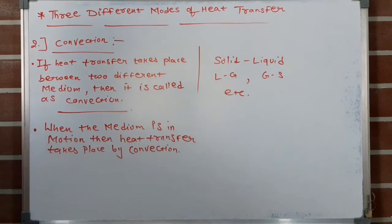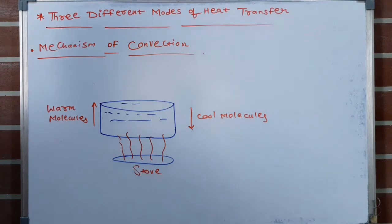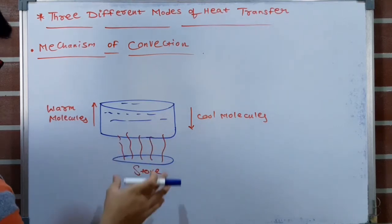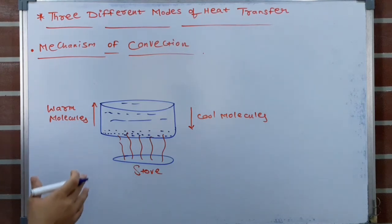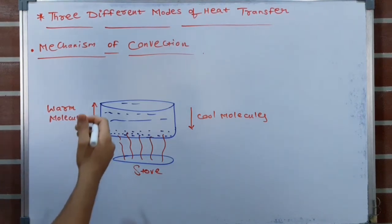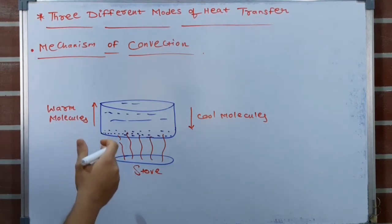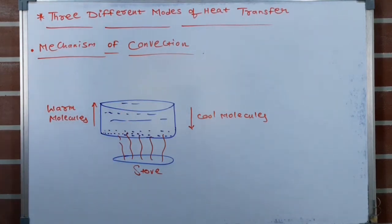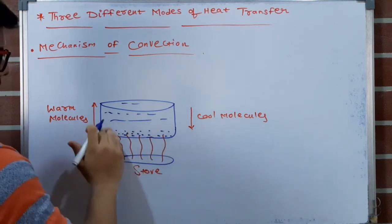Now we will see the mechanism of convection. Consider that we are boiling water in a container; this is the stove with the flames of gas. Molecules of liquid which are close to the solid boundary gain energy or heat, they get excited and come into motion. As the molecules come into motion, they collide with neighboring molecules and transfer heat or energy to them.